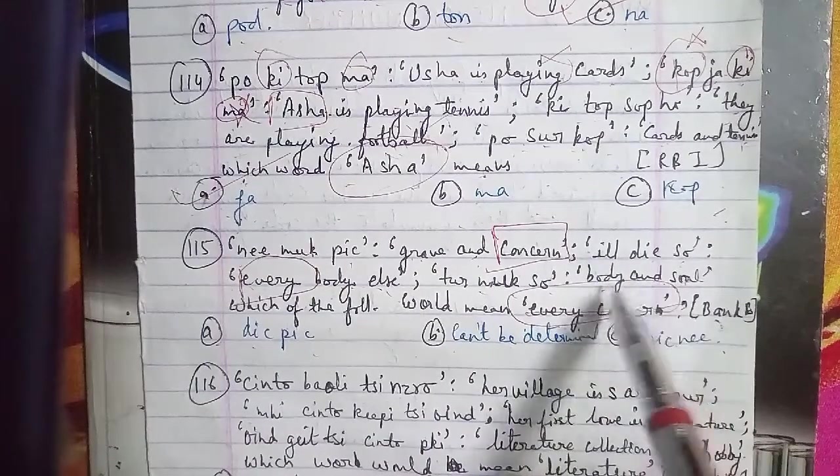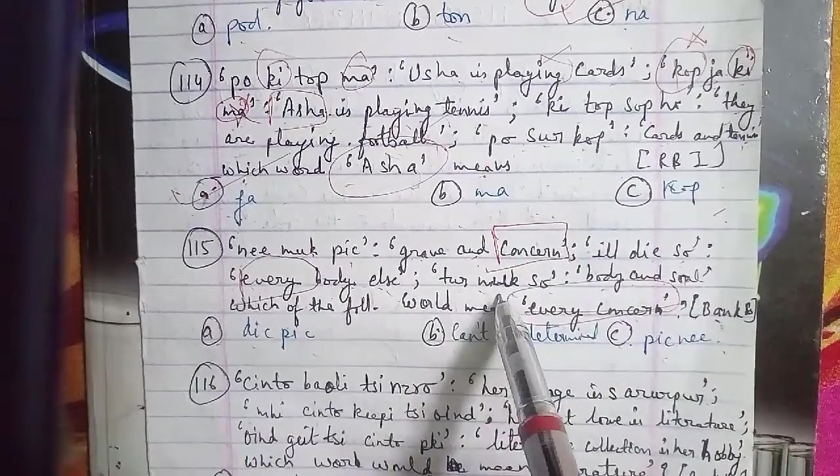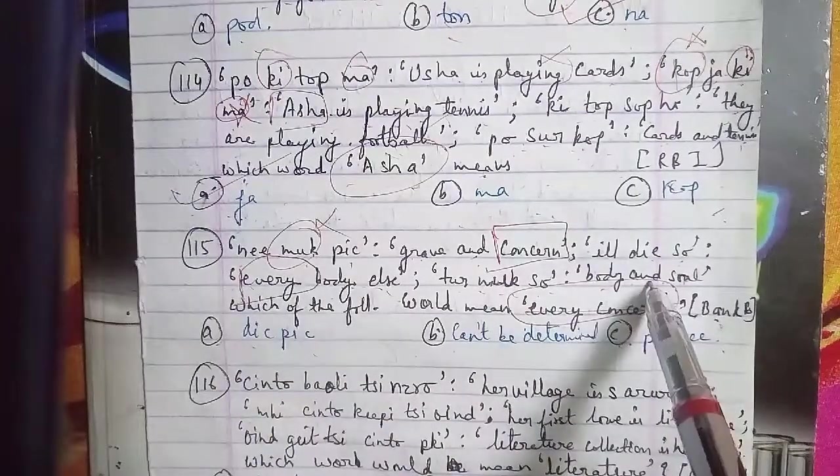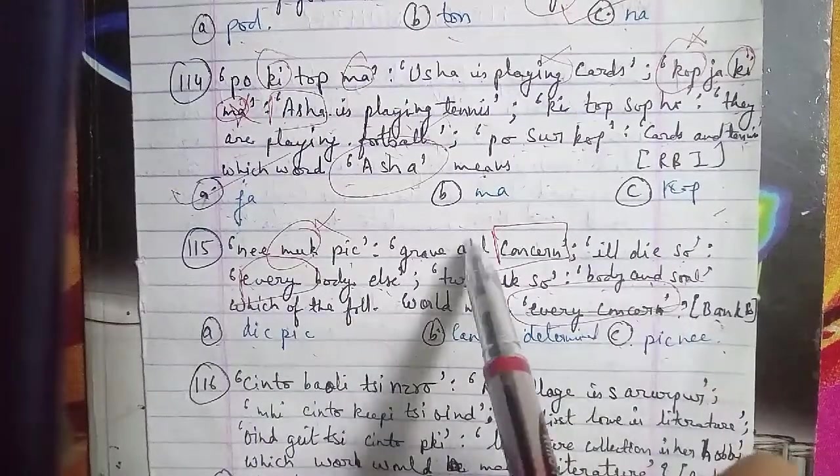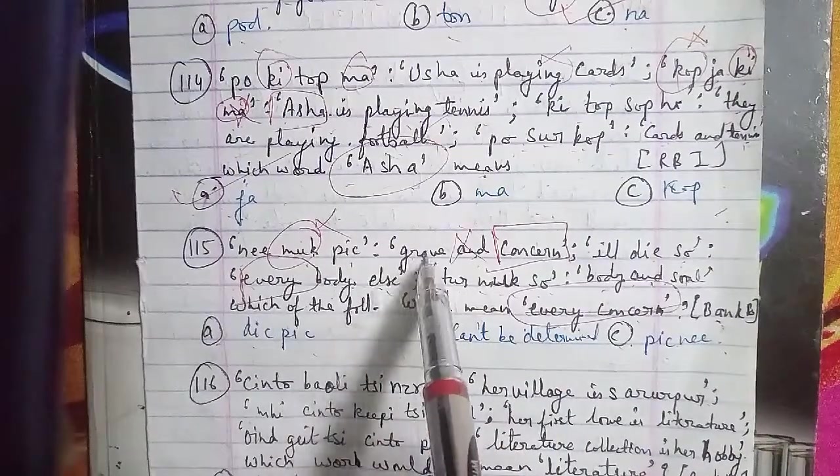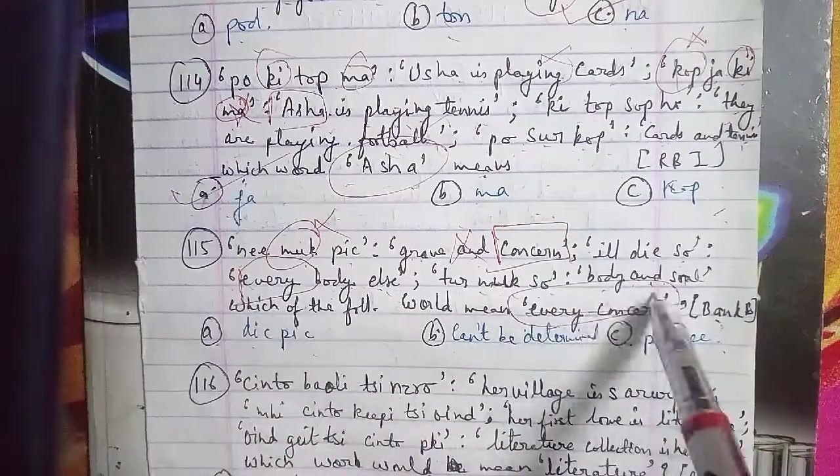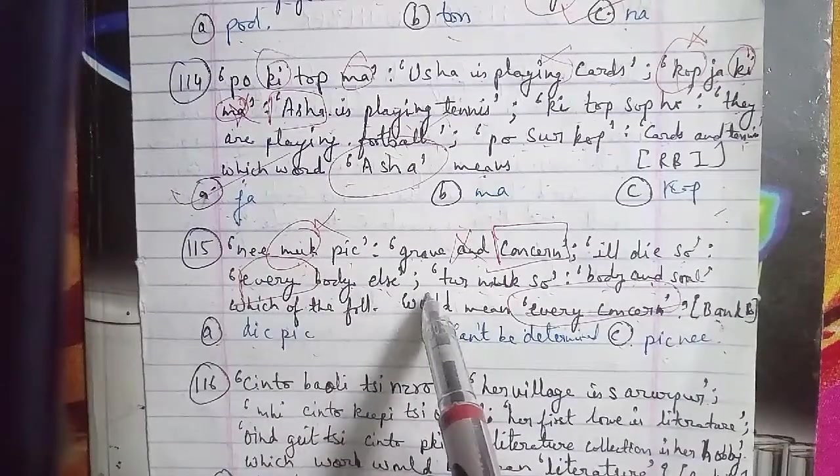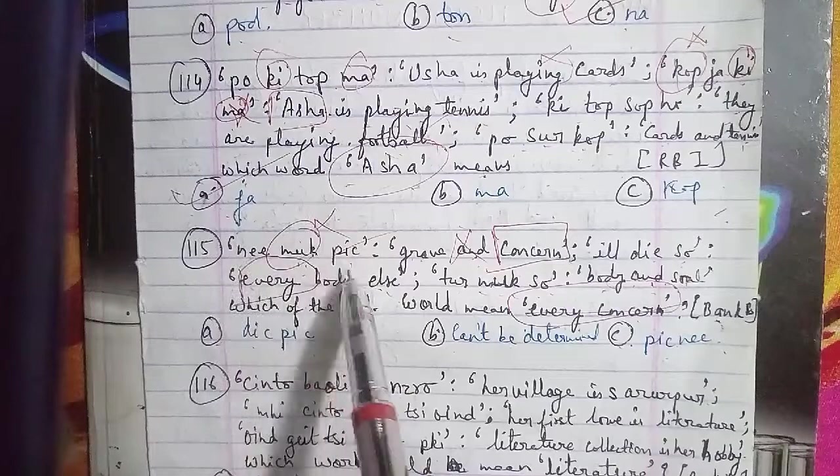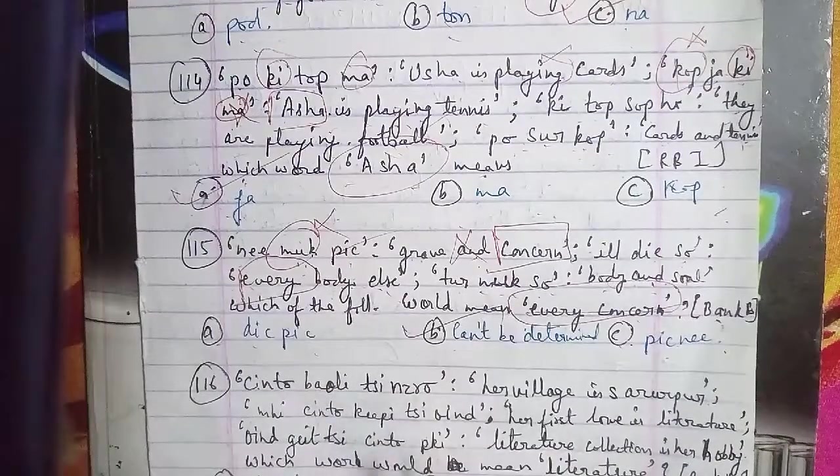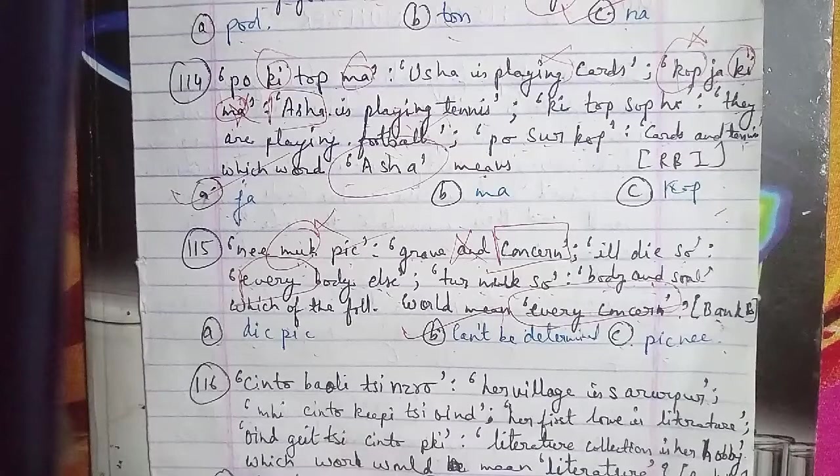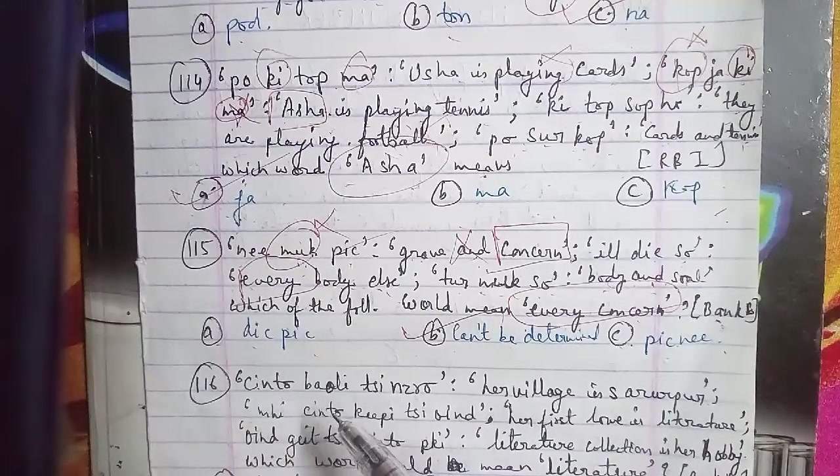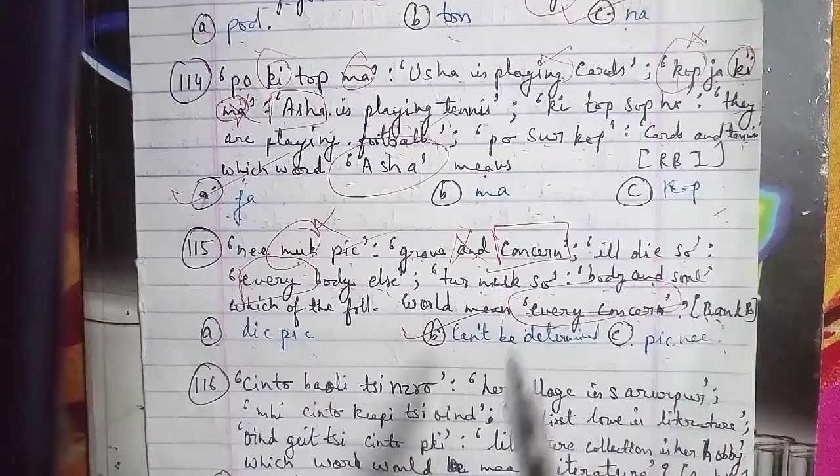Moving to question 116, the last question for this session. Sinto bauli tsi nasro is coded as 'her village is Sarurupur', sinto khipi tsi neto oind is something, geist tsi sinto piki is 'literature collection is her hobby'. Which word would mean literature? We need to find the code for literature.